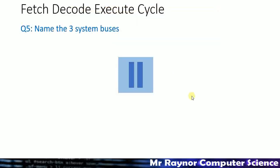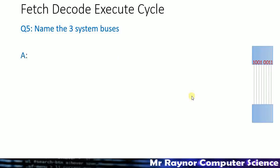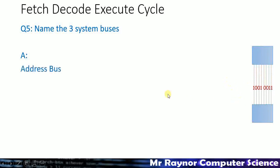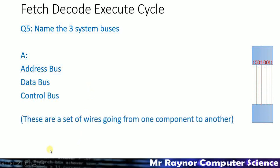Can you name the three system buses? A bus is really just a set of wires connecting two components together — in a real computer there might be 32 or 64 parallel wires. The three buses are the address bus, the data bus, and the control bus.